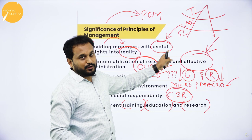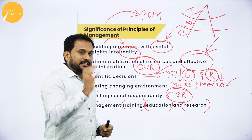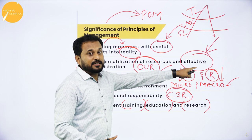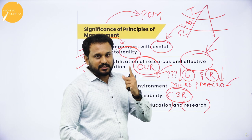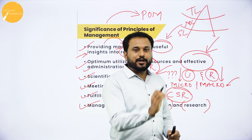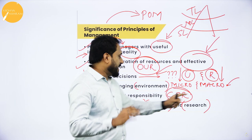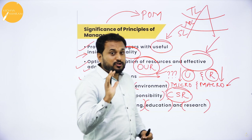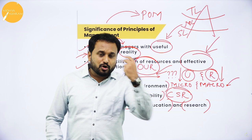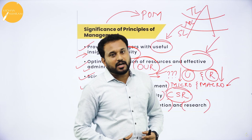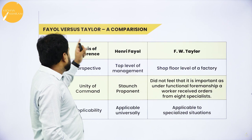To recap, the significances of Principles of Management are: first, they provide the manager with useful insight into reality; second, optimum utilization of resources resulting in effective administration; third, scientific decisions using cause-and-effect relationships; fourth, meeting the changing environment — both micro and macro; fifth, social responsibility — give back to society; and sixth, training, education, and research for all employees.